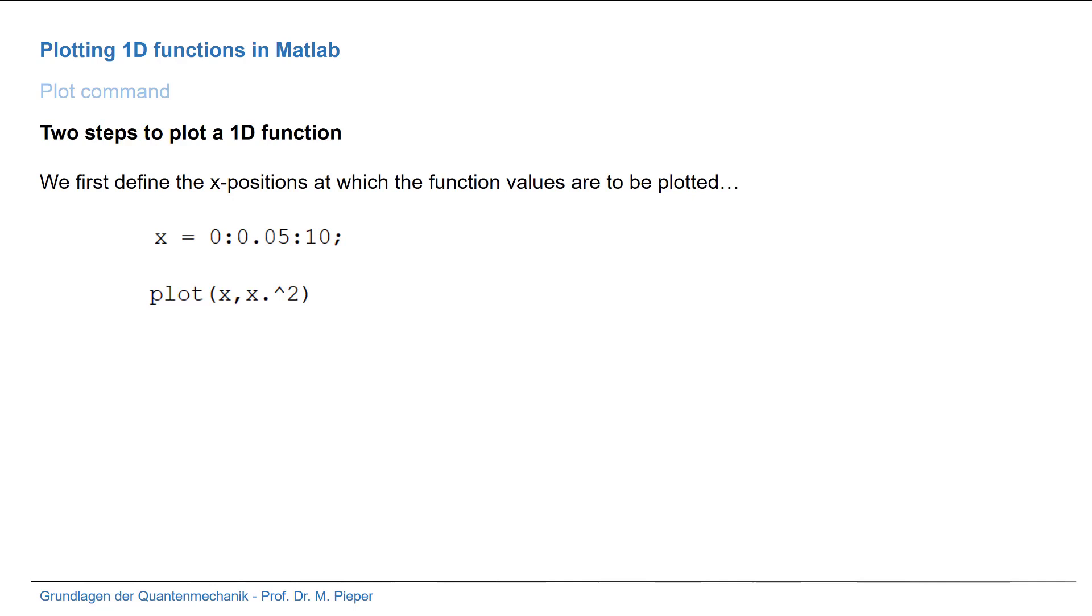In the second step, we plot the function. We write plot(X, and then insert the function we want to plot - in this case, X squared. It's important to use the dot operator because X is a vector and we want the square to be taken element-wise for each element. Otherwise we would get an error message.